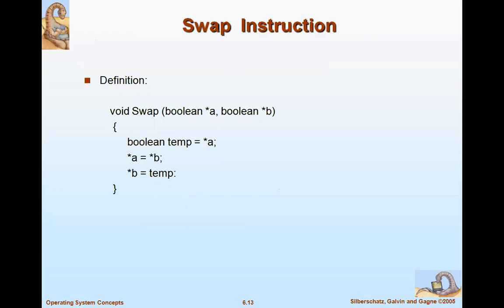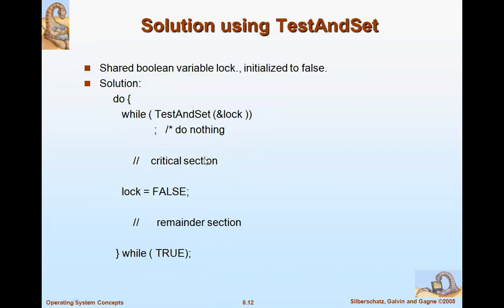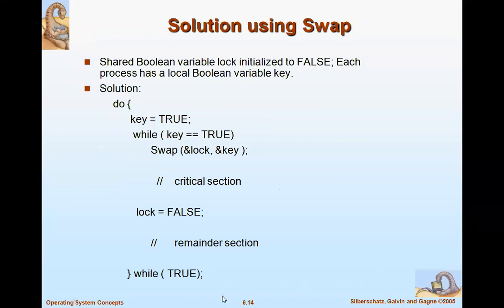After test-and-set, we can also use a swap instruction to swap the lock. The shared boolean variable 'lock' is initialized to false, and each process has a local boolean variable 'key'. Initially, key is set to true. While key == true, swap(lock, key). This is the complete solution combining test-and-set with swap to acquire the lock.